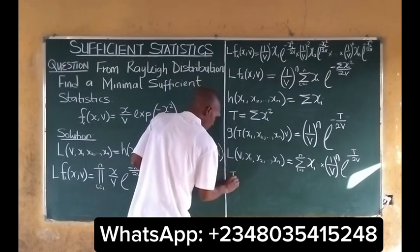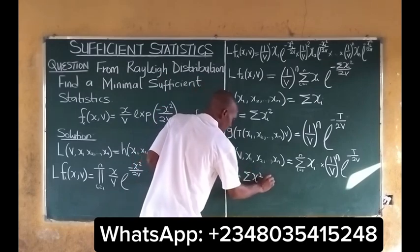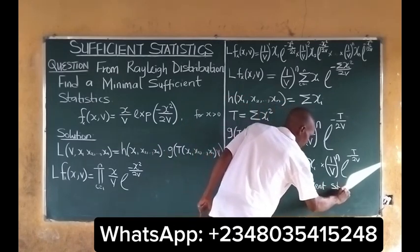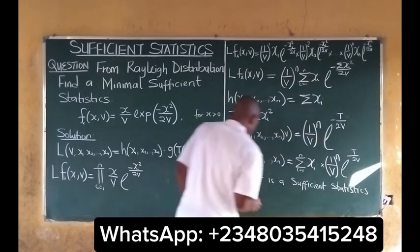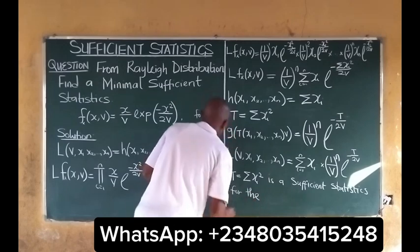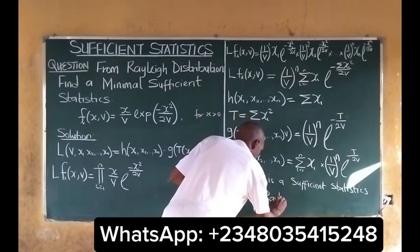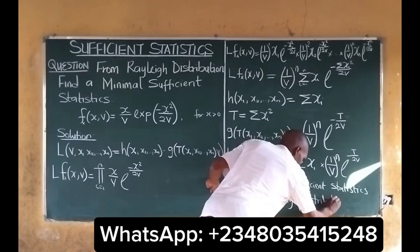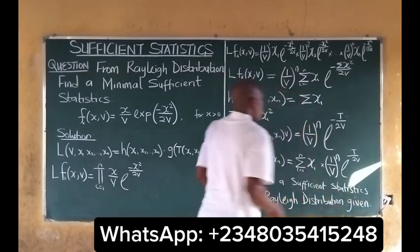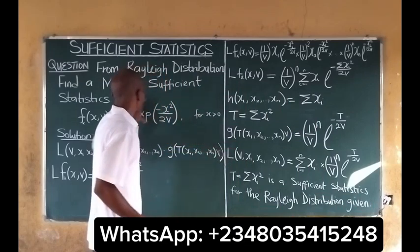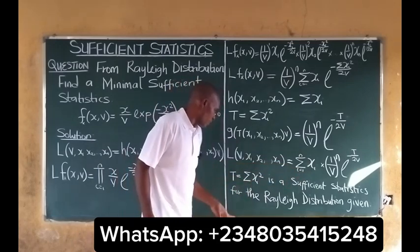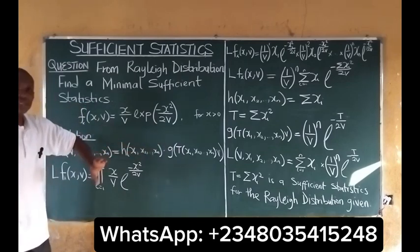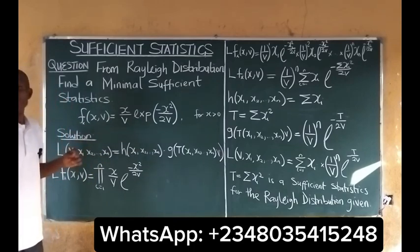So it then means that T, which is equal to the summation of xi squared, is a sufficient statistic for the real distribution given. Since it satisfies the factorization condition, it means it is a sufficient statistic. For more on this topic, you need to subscribe to this channel.